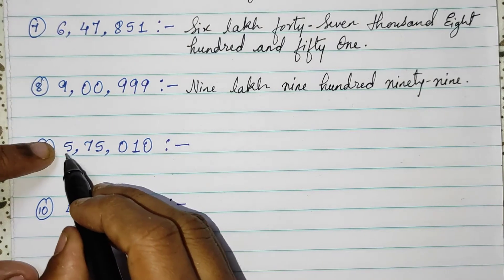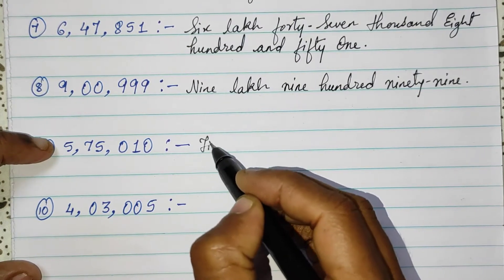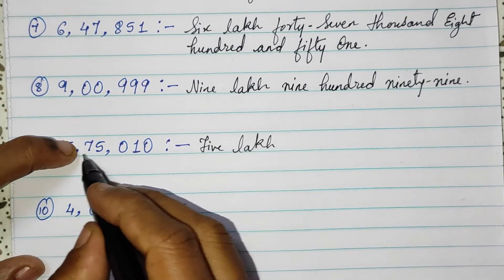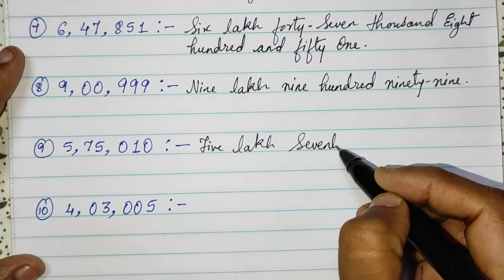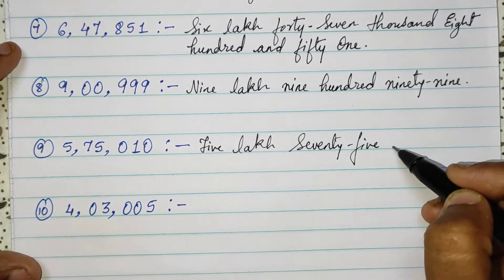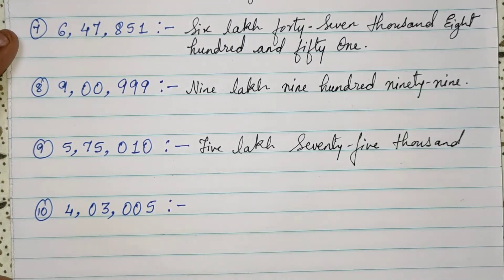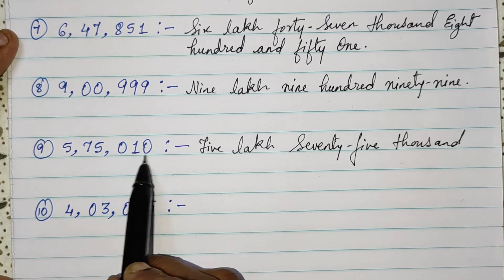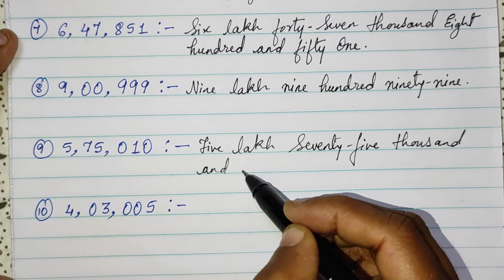Then again a 6-digit number, starting is 5 — 5,75,000. You have 0 in 100 place, so directly 10 and 10.